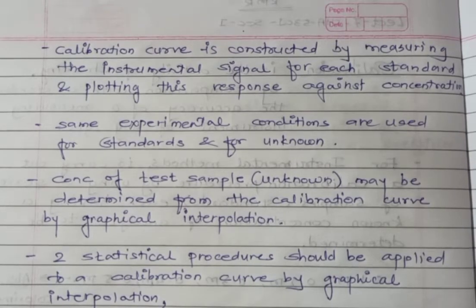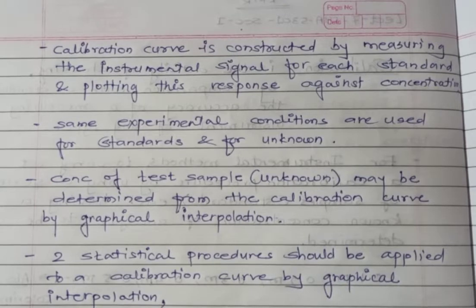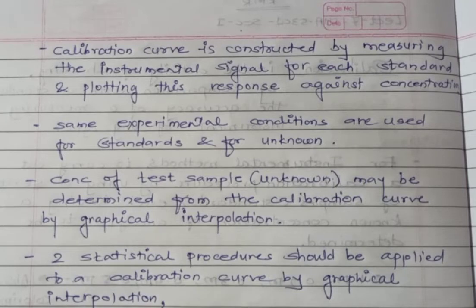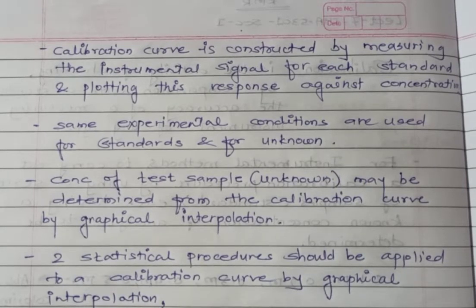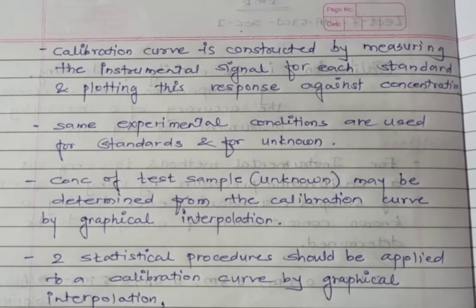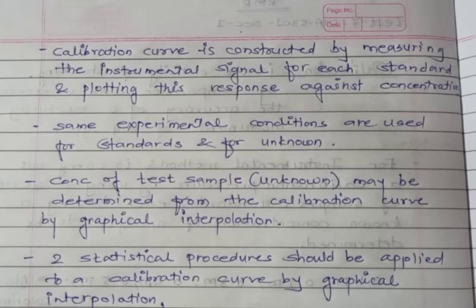From this 1000 ppm stock solution, you prepare a series of solutions like 10 ppm, 20 ppm, 30 ppm, 40 ppm, and 50 ppm. You then measure the signal on the instrument for each standard substance, and plot this response on a graph as absorbance versus concentration or flame emission intensity versus concentration. The result is a straight line.